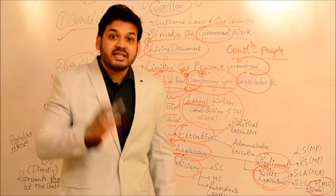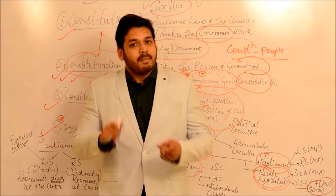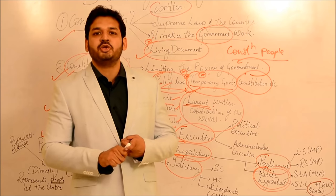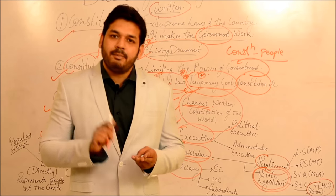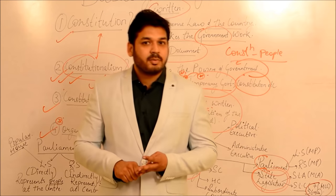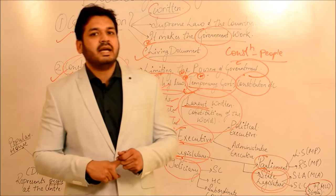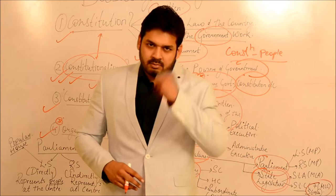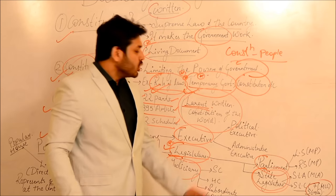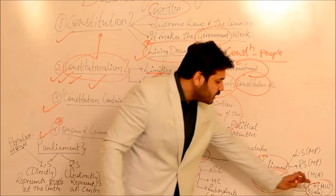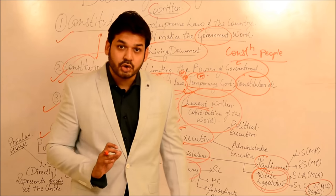The seven states with two houses - you can note these down: first is Jammu & Kashmir, second is Uttar Pradesh, third is Bihar, fourth is Andhra Pradesh, fifth is Telangana, sixth is Maharashtra, and seventh is Karnataka. So these seven states have Vidhan Parishad. Remember this - it is a very important question for Prelims.